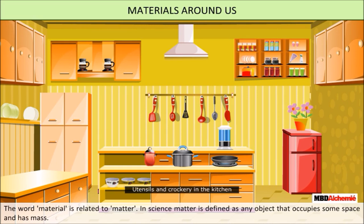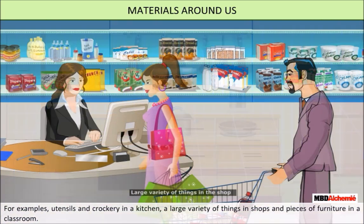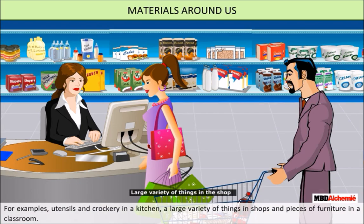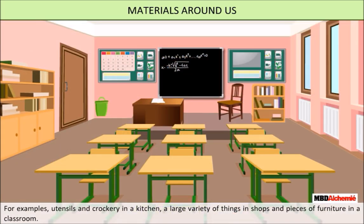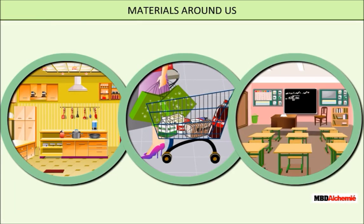We see the materials around us. These materials are related to matter. In science, matter is defined as any object that occupies some space and has mass. You may see utensils and crockery in the kitchen, a large variety of things in the shops, and pieces of furniture in the classroom. These are examples of matter because they occupy space and possess mass.